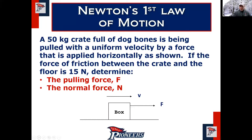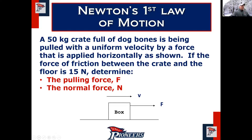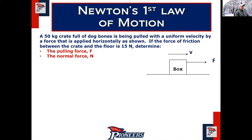Let's look at a problem. The easiest possible situation: you have a box on the ground, mass 50 kilograms, being pulled horizontally. It's moving at uniform or constant velocity — which is important for Newton's First Law. The pulling force is horizontal, and friction is given. In the beginning, problems will give you friction; later we'll calculate it using the friction equation. Determine the pulling force and the normal force.